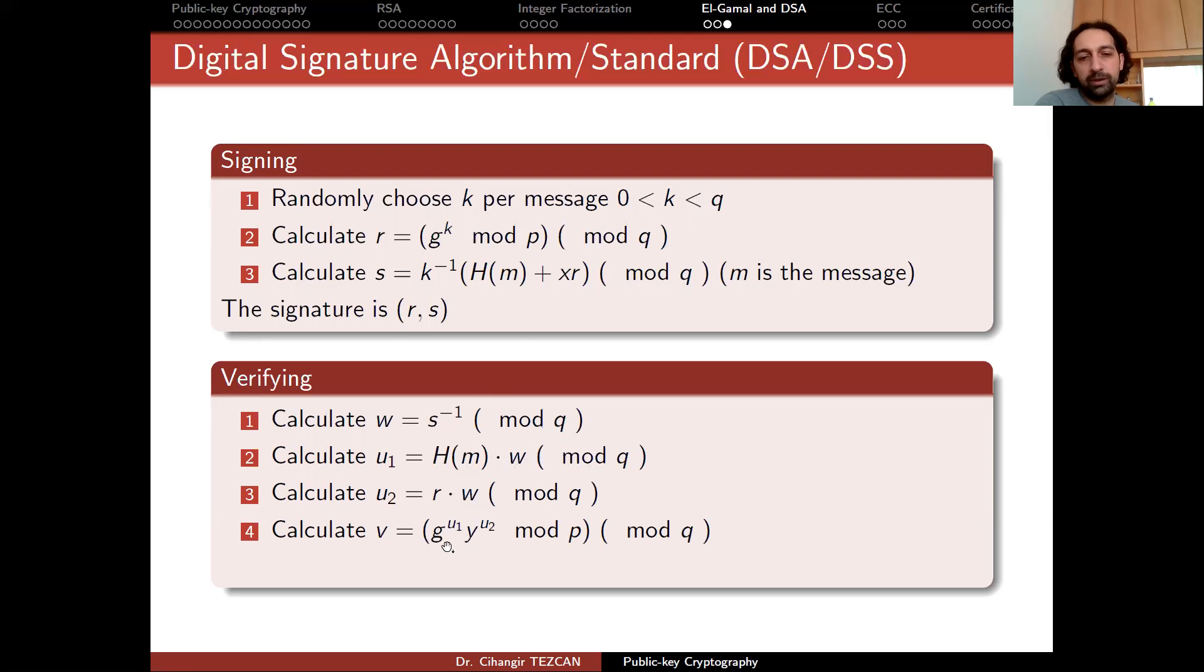Then they calculate G to the U1 times Y to the U2 modulo P and modulo Q which will be equal to V. And at this point you are done. What you do is check if V equals to R. If it is, then you verify the signature because this would mean that only the person who has the secret information X can do these operations. If it is not equal, then the signature is not valid and verification fails.